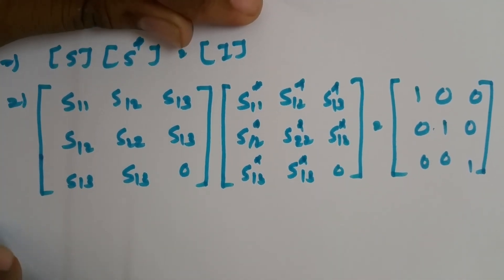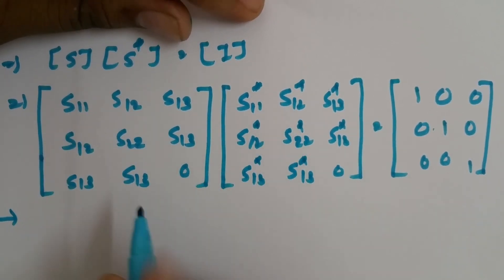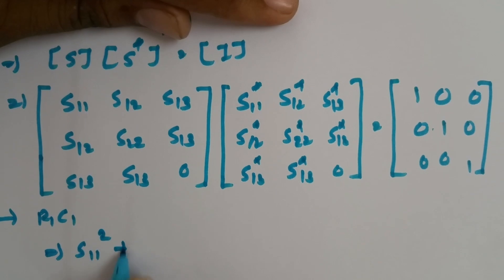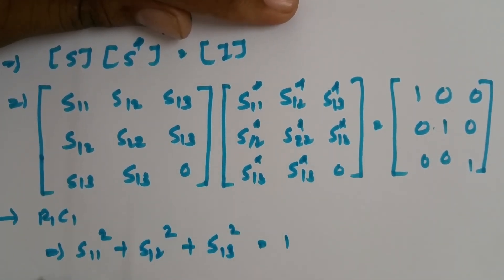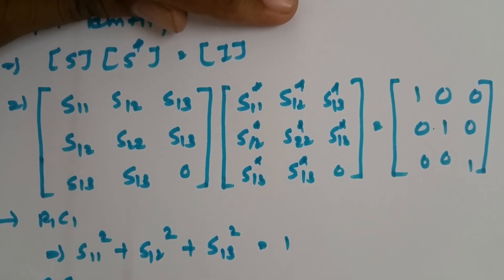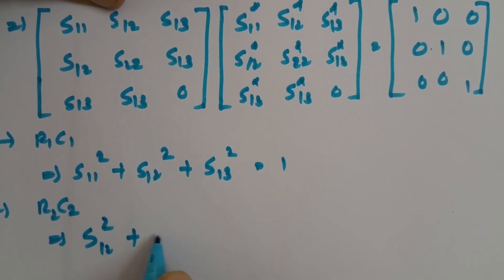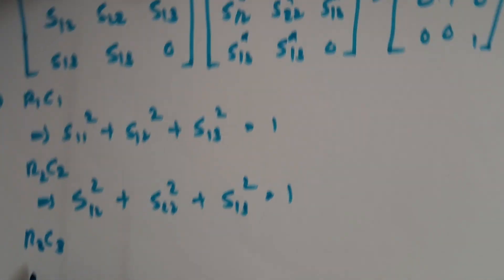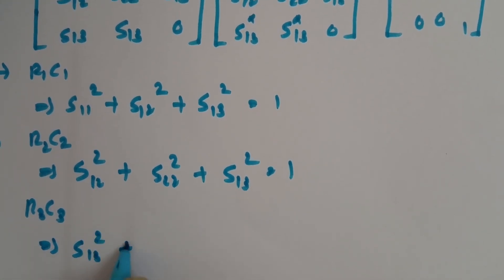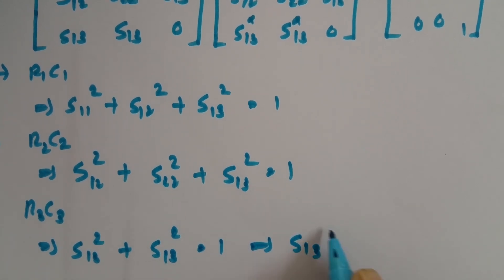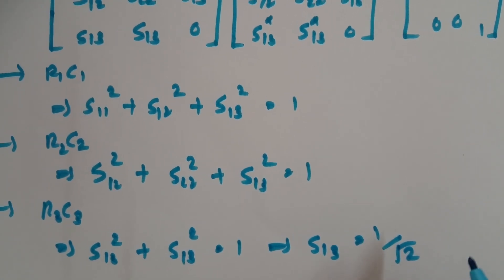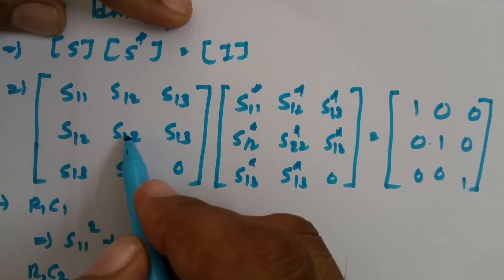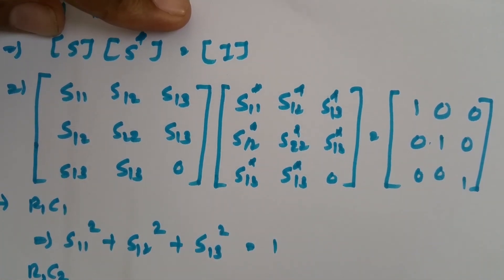To solve the unknown parameters, we will take the multiplication of rows and columns. If we multiply the first row with the first column (R1C1), that gives S11² + S12² + S13² = 1. As per R2C2, S12² + S22² + S13² = 1. And as per R3C3, S13² + S13² = 1, which gives 2·S13² = 1, resulting in S13 = 1/√2.